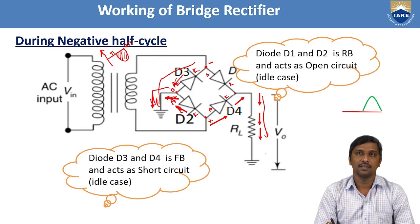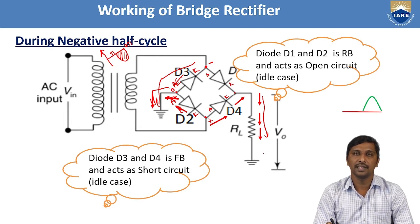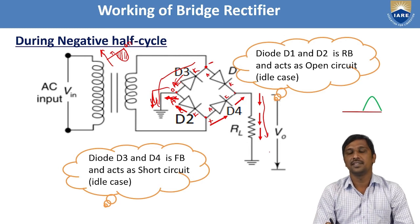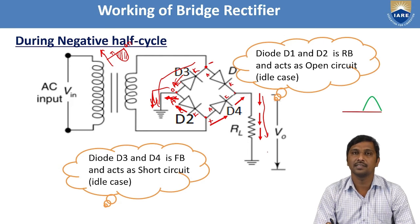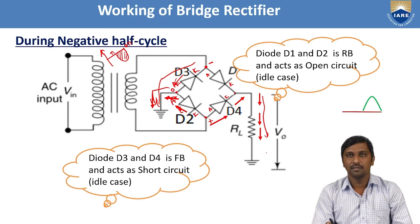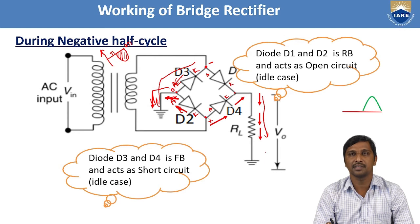From the positive peak and negative peak analysis, the bridge rectifier allows both peaks. Both AC signal peaks are converted into a pulsating DC voltage signal. This completes the analysis of the working of the bridge rectifier using the step-down transformer and four diodes. Now we will analyze some important parameters.